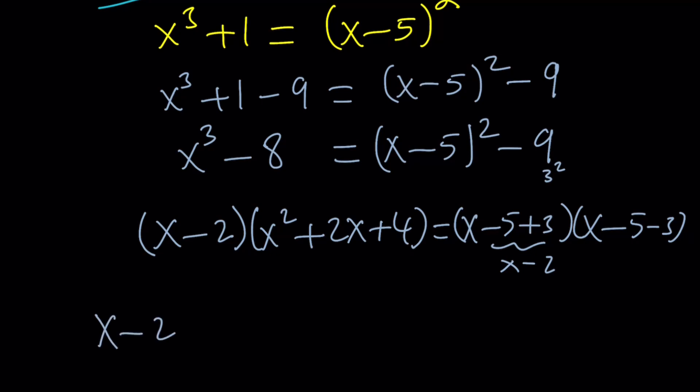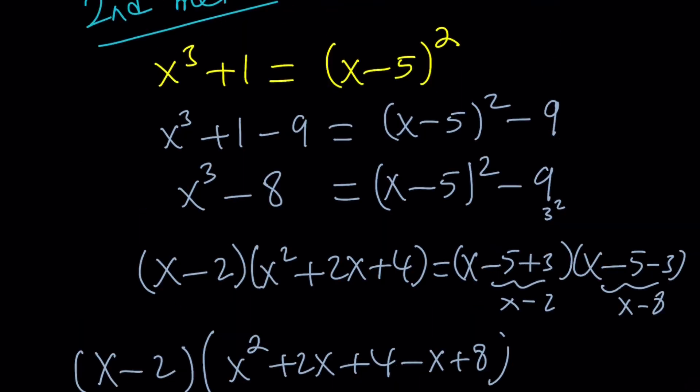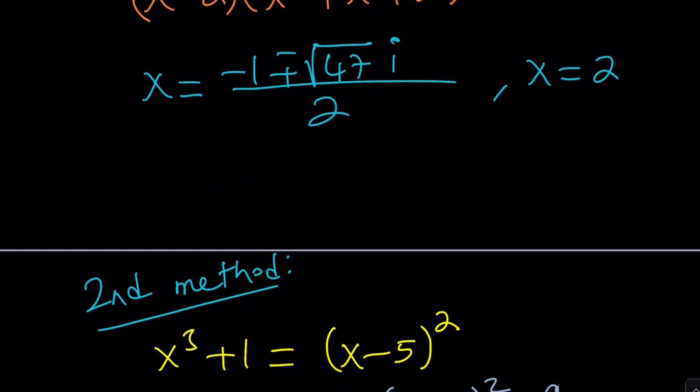Let's put everything on the same side. Take out x minus 2. We're going to get x squared plus 2x plus 4 minus this, which is x minus 8, by the way, so it's going to be minus x plus 8. And then from here we're going to get x minus 2 and x squared plus x plus 12 as before. And the solutions are going to be the exact same solutions as before.